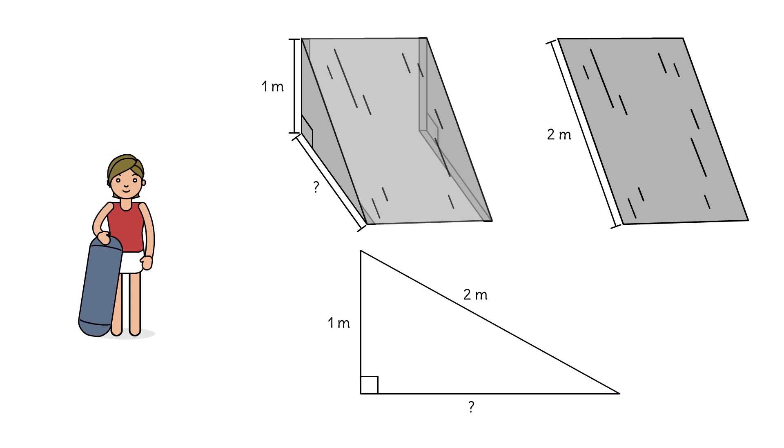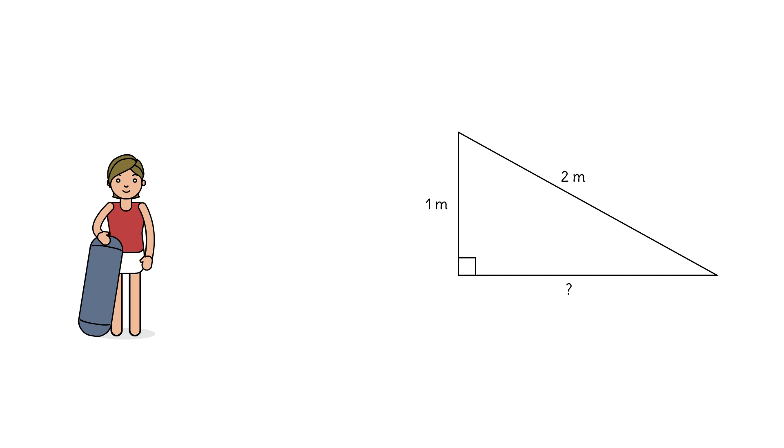Can we find this length? Yes. Because we know two lengths in a right triangle, we can use the Pythagorean theorem to solve for the unknown leg.